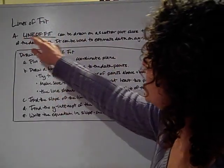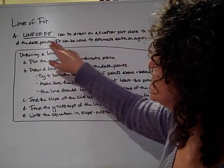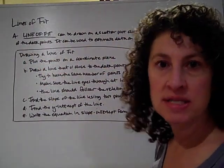Lines of fit. A line of fit can be drawn on a scatter plot close to most of the data points. It can be used to estimate data on a graph.